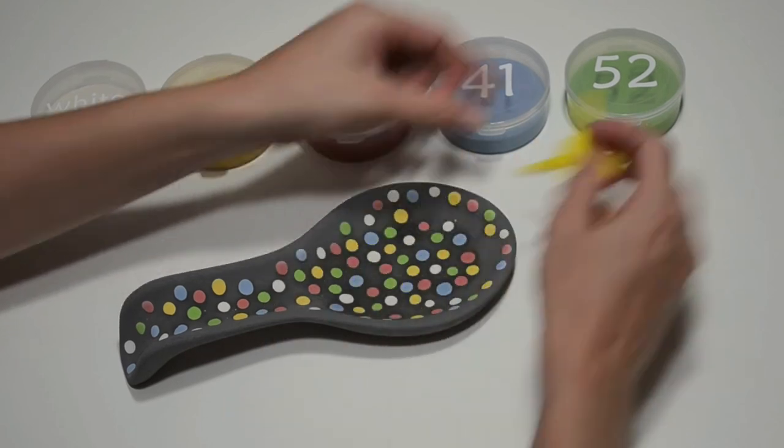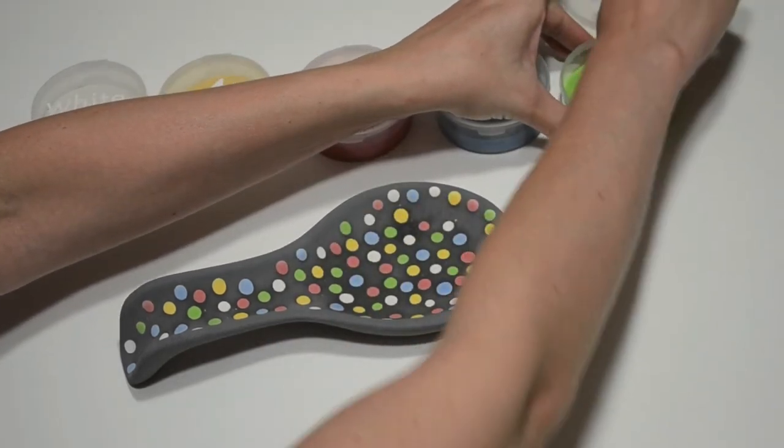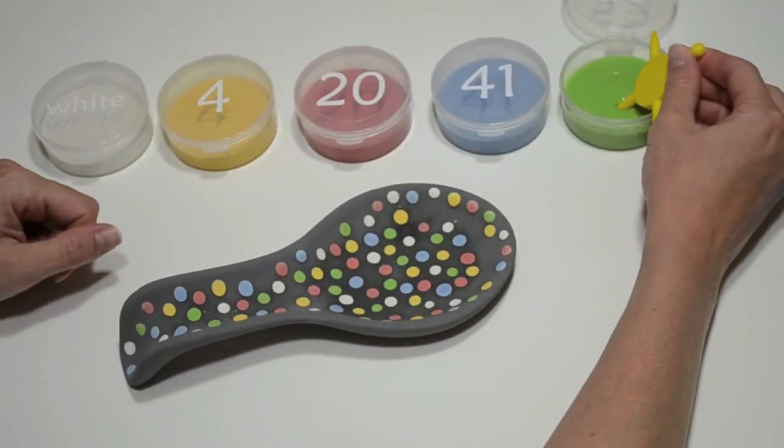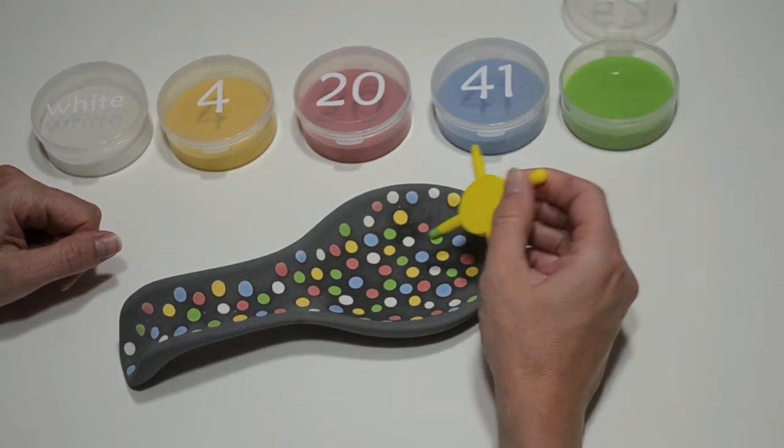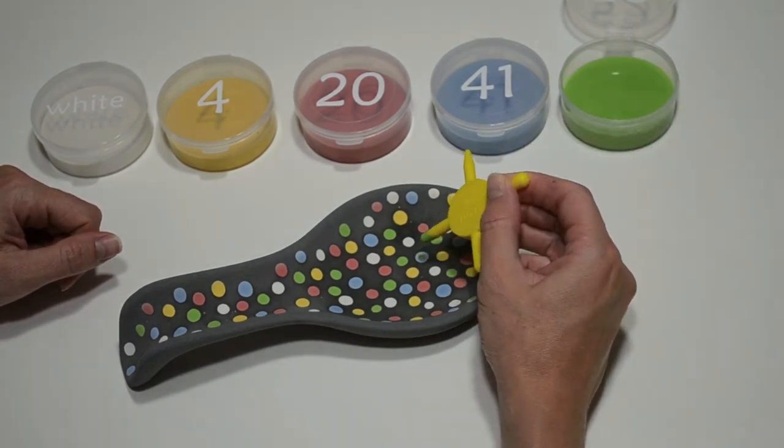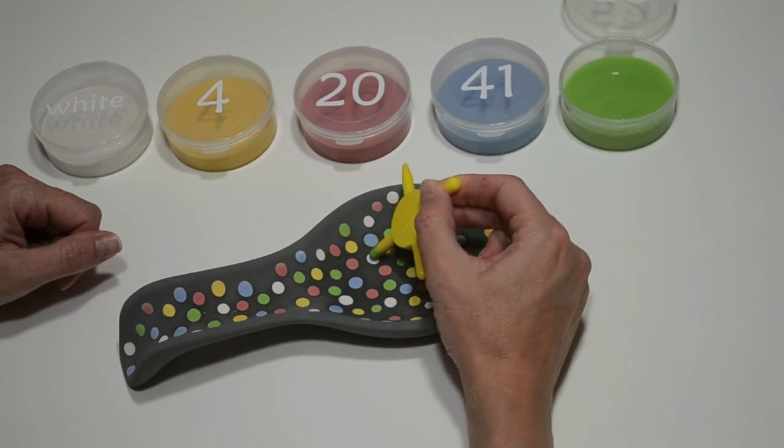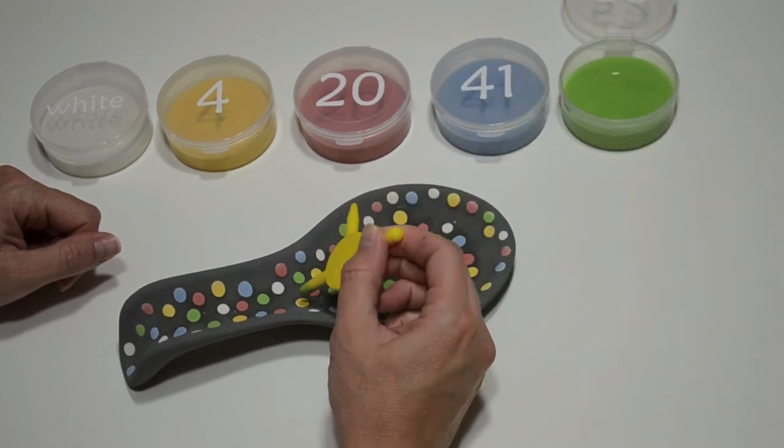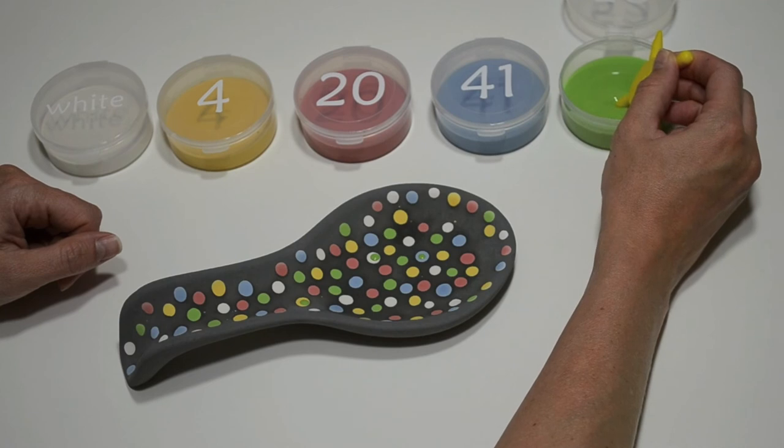Use a smaller sized dot than the previous layer. There is no right or wrong way to add the dots. I just randomly placed different colored dots on the previous layer. After I finish with this layer, I'll add a third layer with even smaller dots.